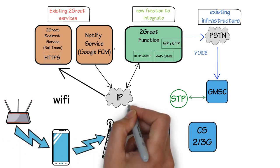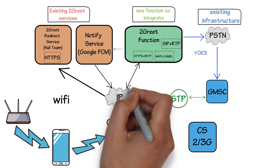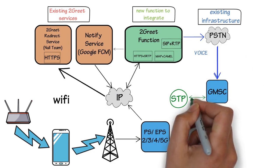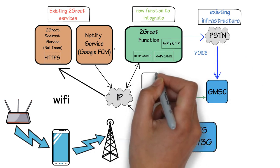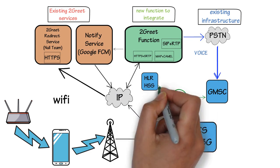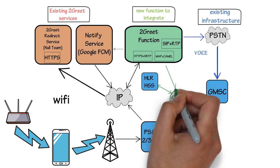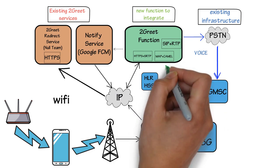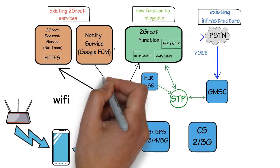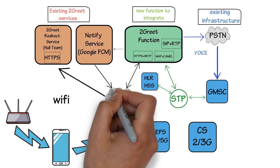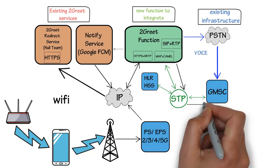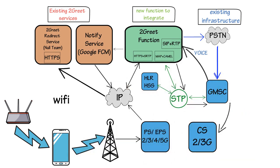The only significant change in the network is adding a Terminating CAMEL subscription for the GMSC. This allows the 2Greet function to control mobile-terminated calls and deliver them over any data service if possible. If the call cannot be placed over the data service, it will fall back to the existing method.